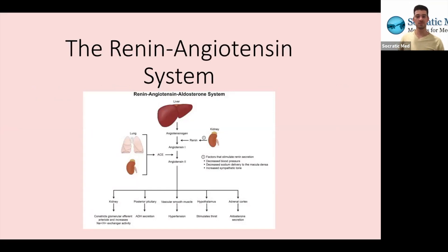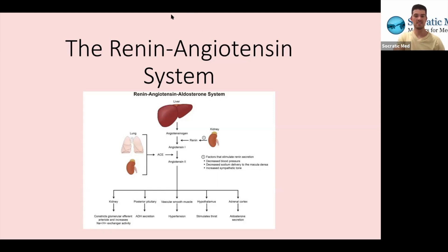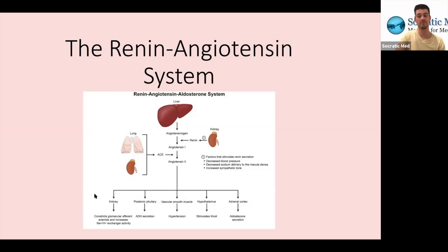Now we're going to talk about the renin-angiotensin system. It has a couple of names — the renin-angiotensin-aldosterone system, as shown above the diagram. I was trying to pick a diagram that was easy to read, simple enough to give us the bare bones of exactly what we need for the MCAT. You should definitely know everything up until the last items at the bottom, and be familiar with the trend of what those are doing.